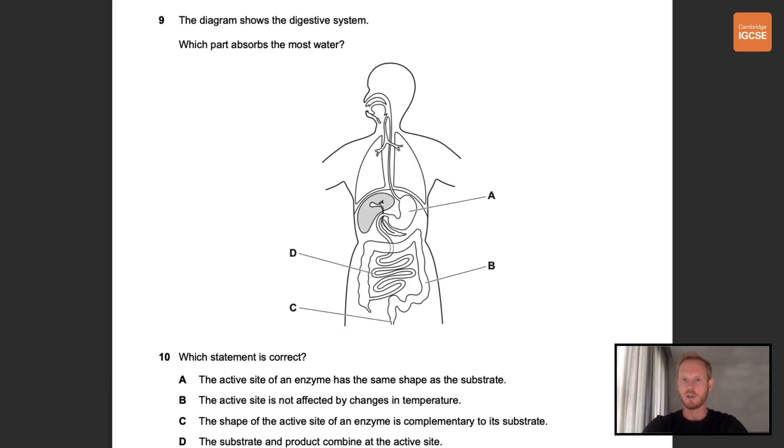Number nine. The diagram shows the digestive system. Which part absorbs the most water? Now in topic 7.5 we learned that the small intestine is the region where nutrients are absorbed as well as most of the water. So the correct answer is D.